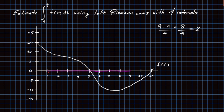Let's look at the first contribution to our Riemann sum using left-hand endpoints. I go from 1 to 3, use the left-hand side at t = 1, where the value is 10. The area of this rectangle is height times base: 10 times 2. The next interval is 3 to 5. Using the left-hand endpoint, the height is about 7.5, so this area is 7.5 times 2.